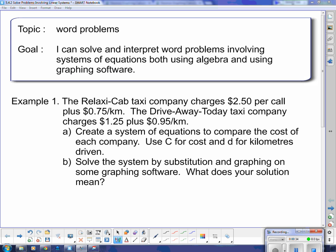So example number one, the Relax-A-Cab taxi company charges $2.50 per call plus $0.75 per kilometer. The Drive Away Today taxi company charges $1.25 plus $0.95 per kilometer. Create a system of equations to compare the cost of each company. Use C for cost and d for kilometers driven.